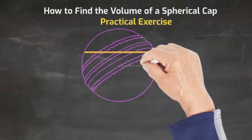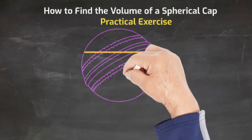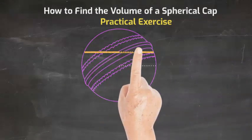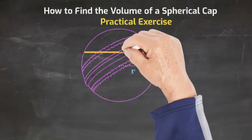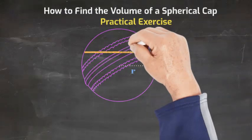There is also another formula that can be used to calculate this. The alternate formula is volume equals 1 sixth times pi times height times the sum of 3 times the base radius of the spherical cap squared plus height squared.